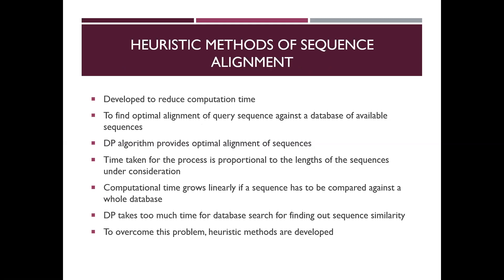In the previous class we discussed in detail about the dynamic programming method and concluded that it gives the optimal alignment of two sequences under consideration. When we have dynamic programming for producing the optimal alignment, what is the necessity to have an alternative method like heuristic sequence alignment? Basically, heuristic methods are developed to reduce computation time in order to find the optimal alignment of a query sequence against a database. Though dynamic programming provides optimal alignment, the time taken is proportional to the length of the sequences.